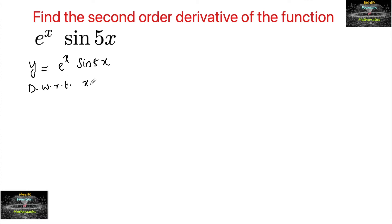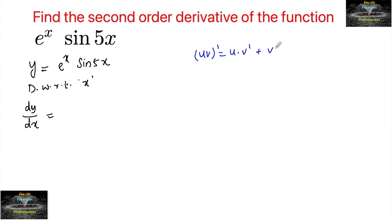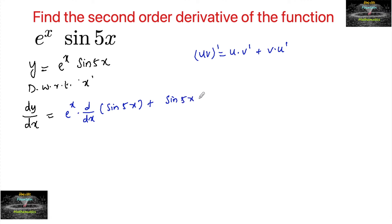Differentiating with respect to x, we have dy by dx. Let us apply the UV rule: UV dash is equal to u into v dash plus v into u dash. So we have e to the power of x into d by dx of sin 5x, plus sin 5x into d by dx of e power x.